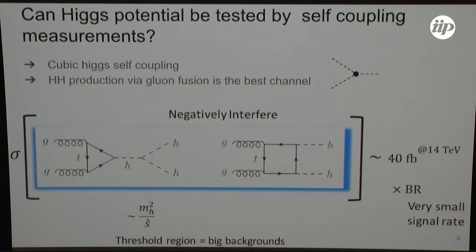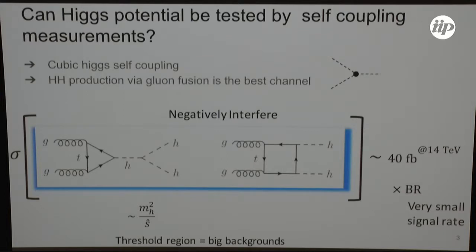This measurement is quite non-trivial. The cross-sections are very small. The branching ratios for the specific channel that looks the cleanest are also very small. So usually, in the standard model, you look for multi-Higgs production via gluon fusion. The usual diagrams we encounter are the triangle diagram, where you have the Higgs cubic coupling and the top Yukawas. This diagram interferes negatively with the box diagram because the Higgs propagator has an off-shell contribution, causing a lot of suppression. You end up with a very small signal rate at the 14 TeV collider.